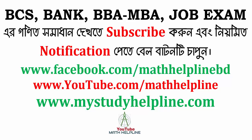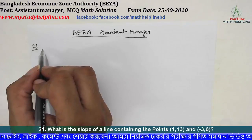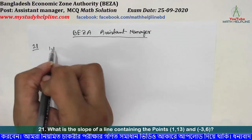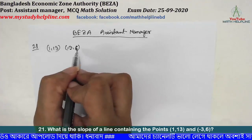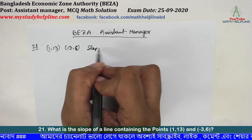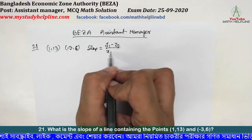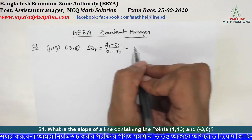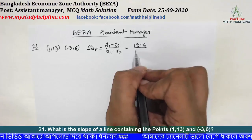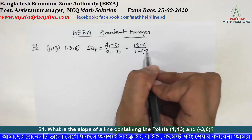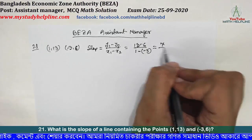What is the slope of a line containing the points (1, 13) and (-3, 6)? The slope formula is: slope = (y1 - y2) / (x1 - x2). Calculating: (13 - 6) / (1 - (-3)) = 7 / 4.